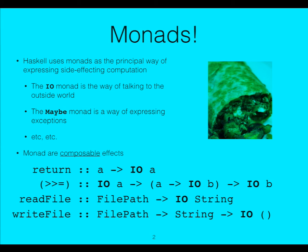Monads are what we use as a mechanism for expressing computation — this is the background of what we're going on. If you don't understand monads, you won't understand remote monads. We have the IO monad, the Maybe monad, and critically we have bind and return. Bind is the way we take two monadic actions and join them together to build a bigger action. Down here, read and write file — you're building up computations that are doing something.